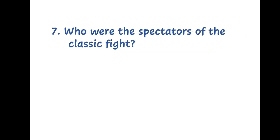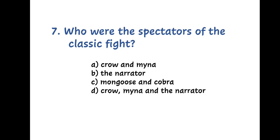Question 7. Who were the spectators of the classic fight? A. Crow and myna, B. The narrator, C. Mongoose and cobra, or D. Crow, myna and the narrator.